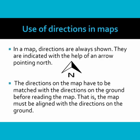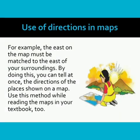Let's see the use of directions in maps. In a map, directions are always shown. They are indicated with the help of an arrow pointing north. The directions on the map have to be matched with the directions on the ground before reading the map. That is, the map must be aligned with the directions on the ground. For example, the east on the map must be matched to the east of your surroundings. By doing this, you can tell at once the directions of the places shown on a map. Use this method while reading the maps in your textbook too.